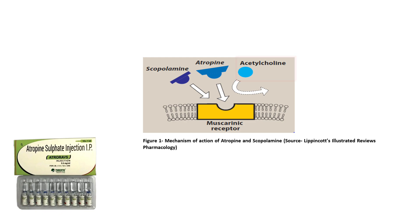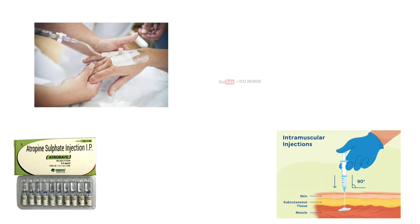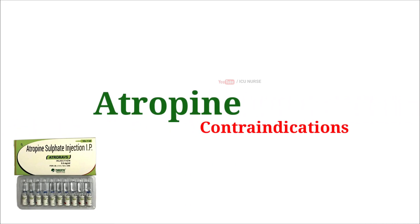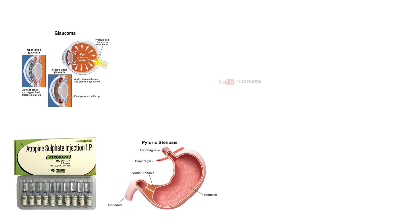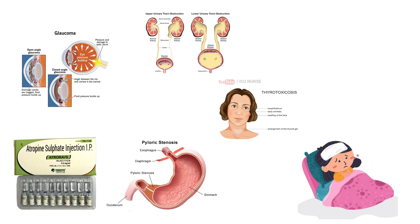Mechanism of action: Atropin works by blocking the effects of acetylcholine, a neurotransmitter responsible for various bodily functions. Routes of administration: Atropin can be administered intravenously, intramuscularly or subcutaneously. Intravenous administration provides the fastest onset of action. Contraindications: Injection atropin is generally contraindicated in patients with glaucoma, pyloric stenosis, thyrotoxicosis, fever, urinary tract obstruction and ileus.